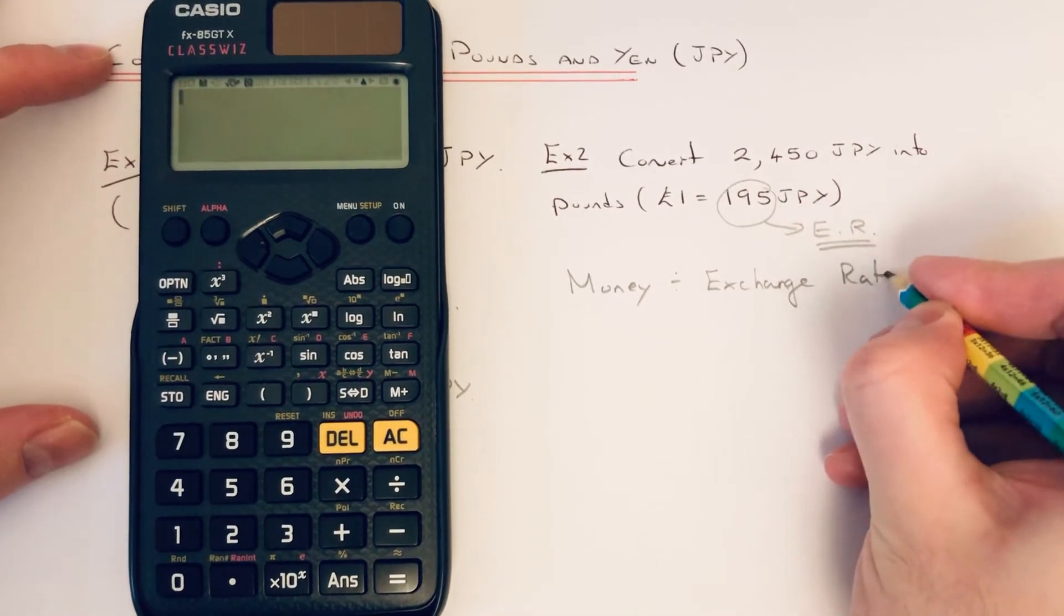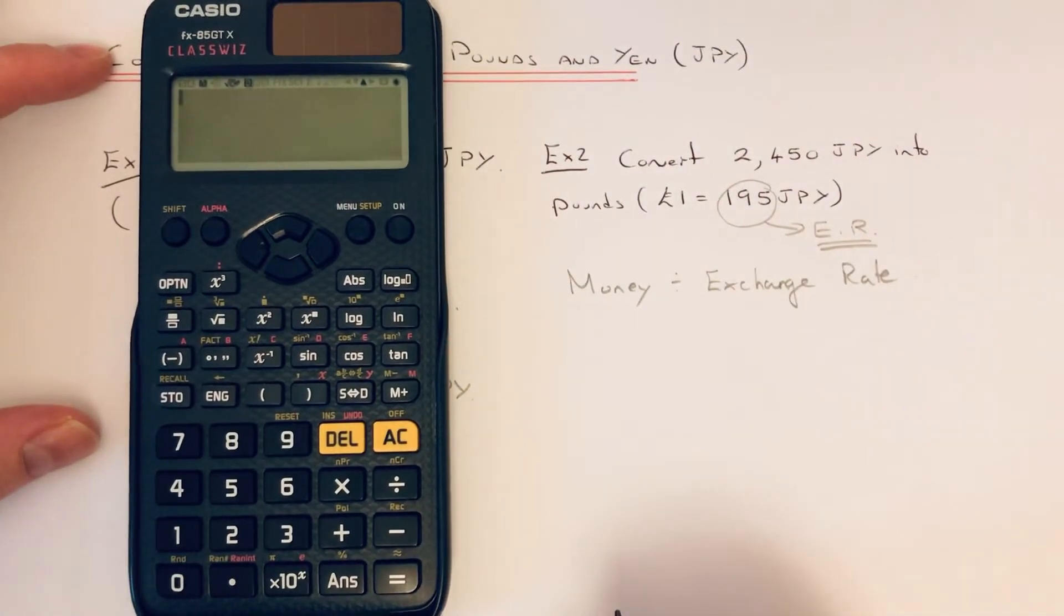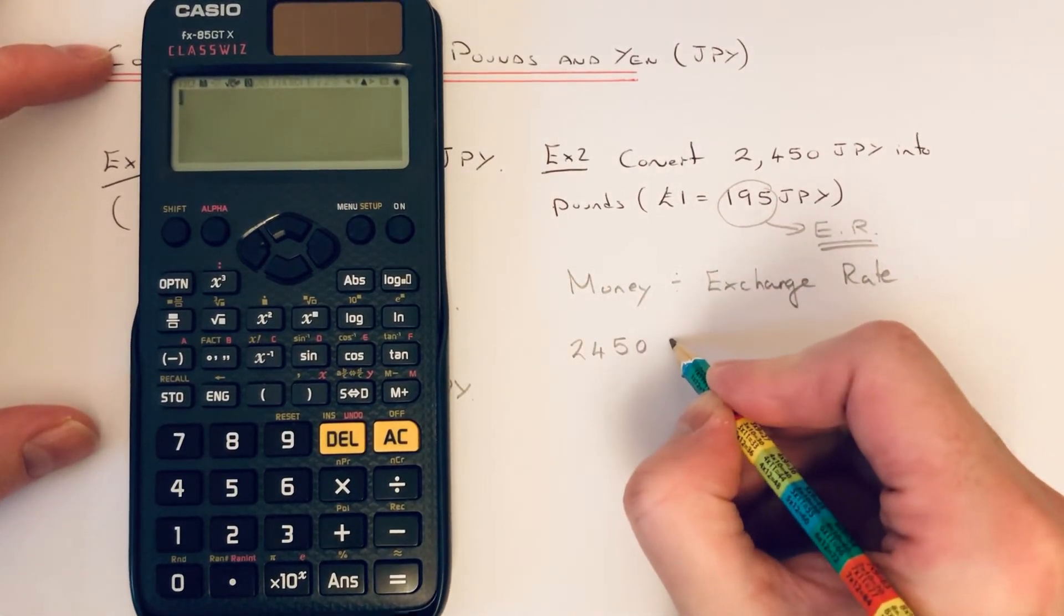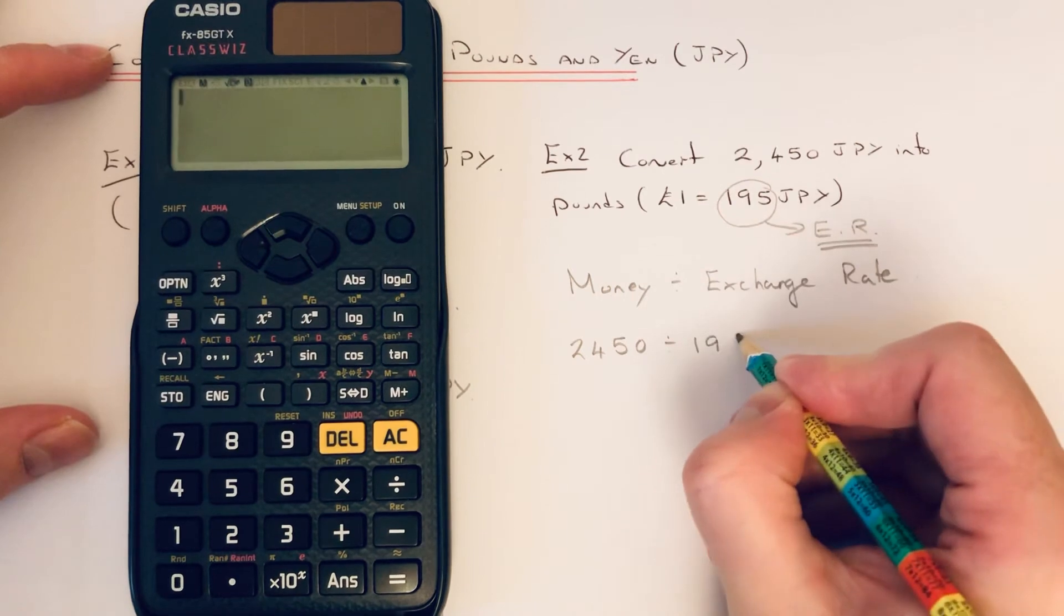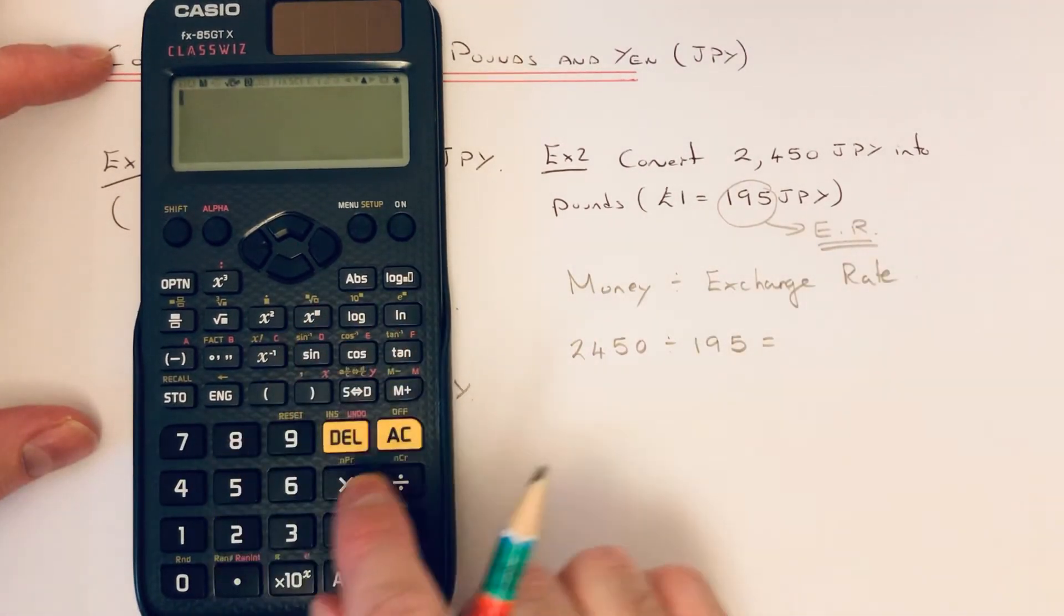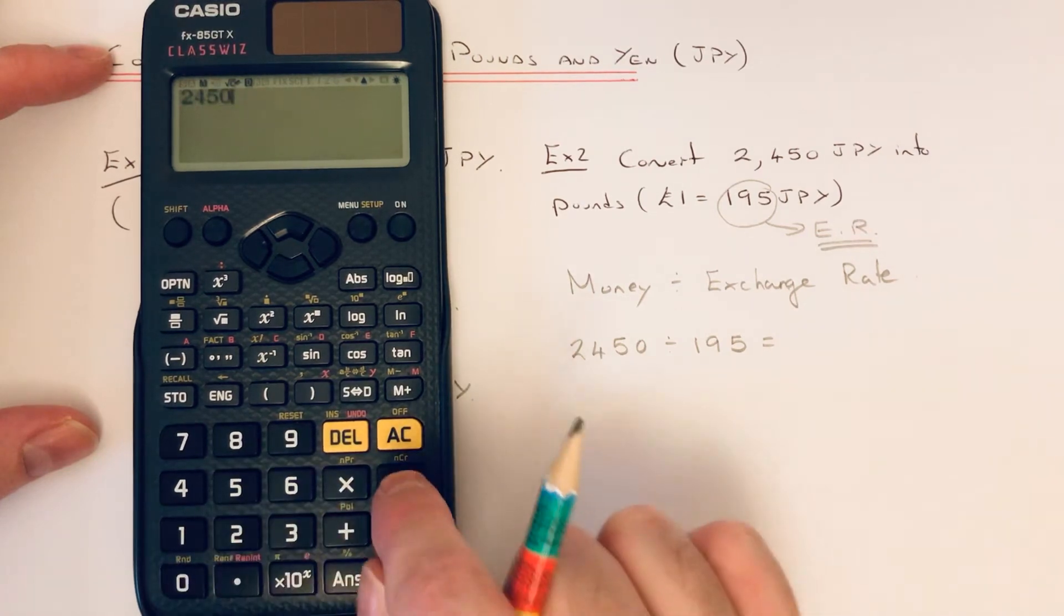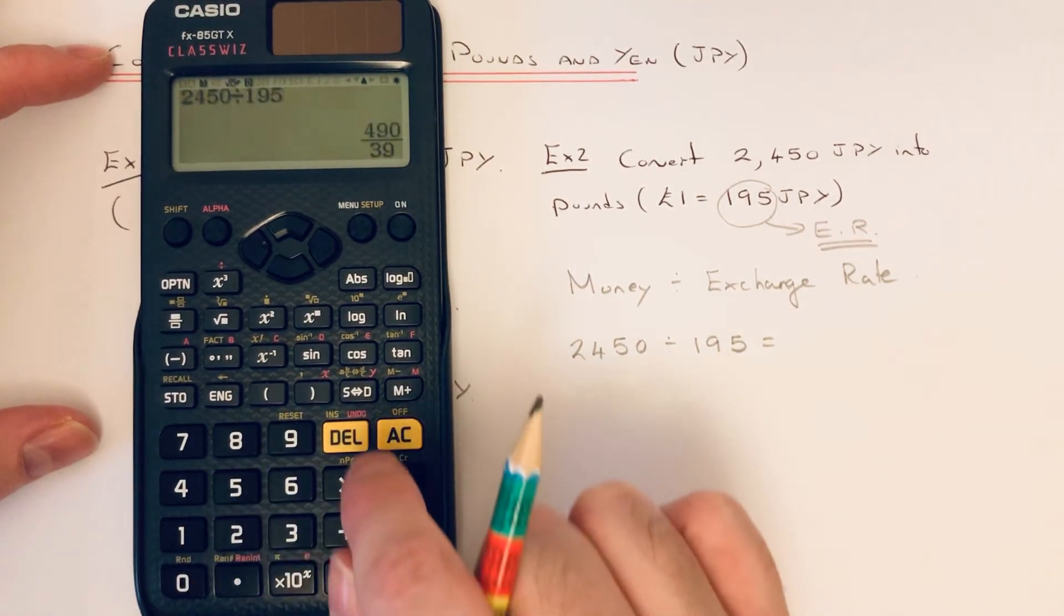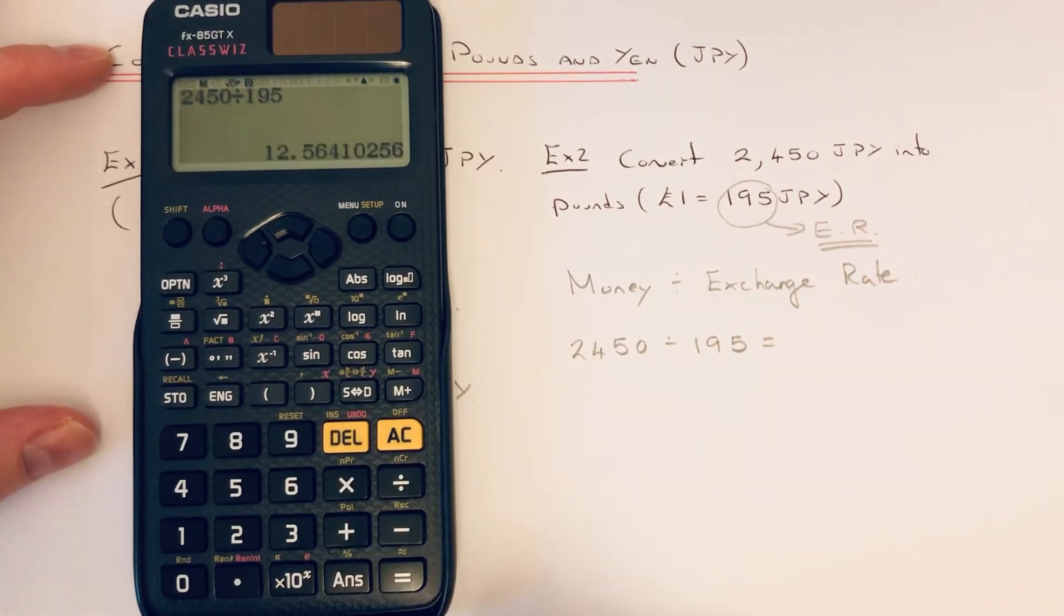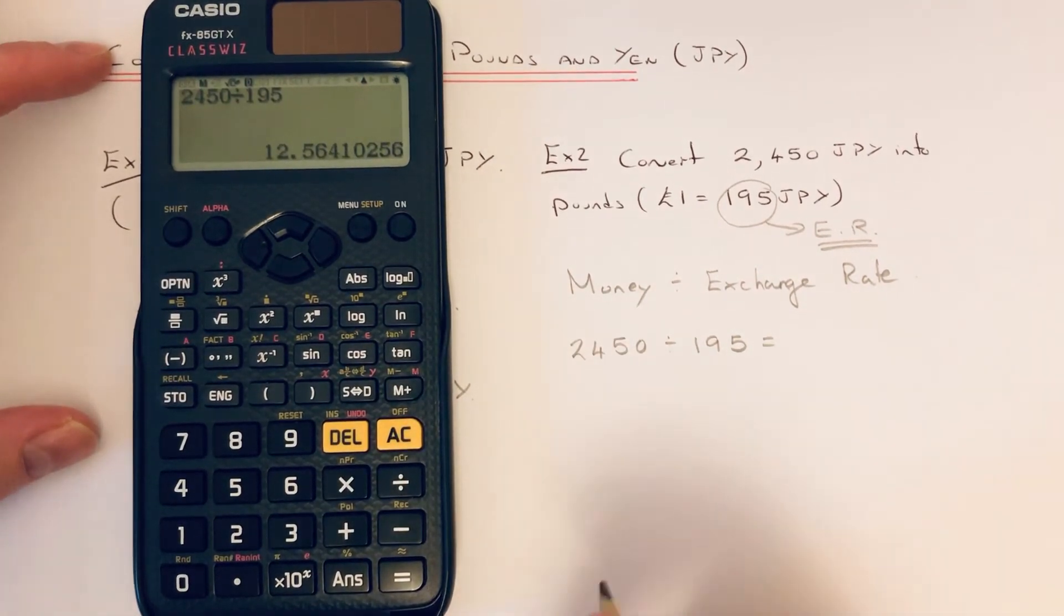So we've got 2,450 Japanese yen, divide that by 195, and you just need to round this off to two decimal places because it's a money question.